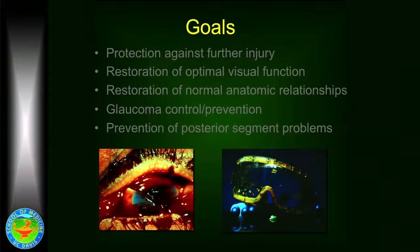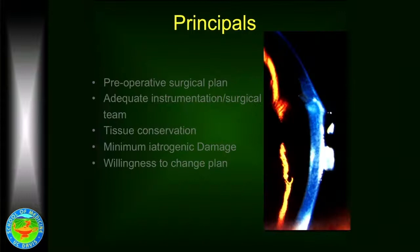The next goal is to restore optimal visual function. Thirdly, we want to restore normal anatomic relationships, and then we want to prevent the longer-term complications including glaucoma and retina problems. The most important thing you can do when a patient comes in like this, until you are in the operating room, is to protect them with glasses or a shield — some way in which there is no pressure on the eye and no possibility of worsening the injury.